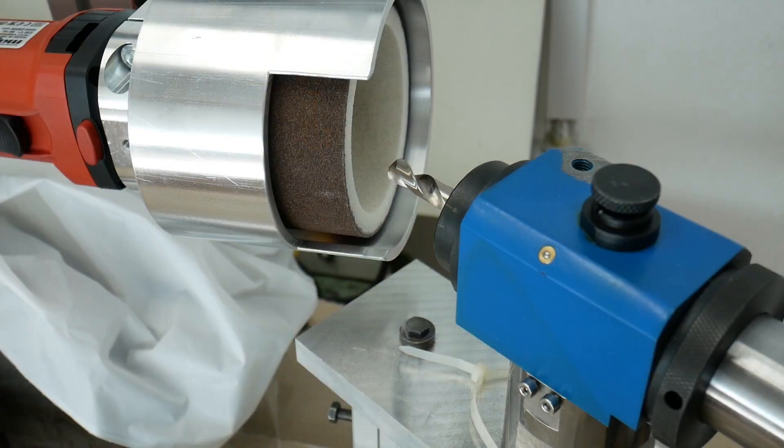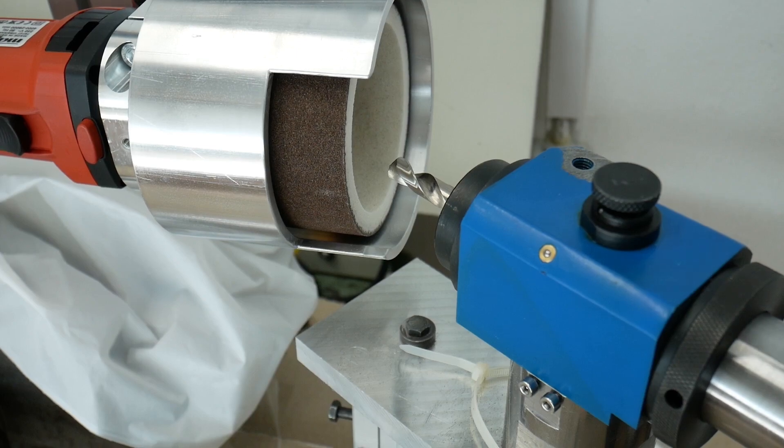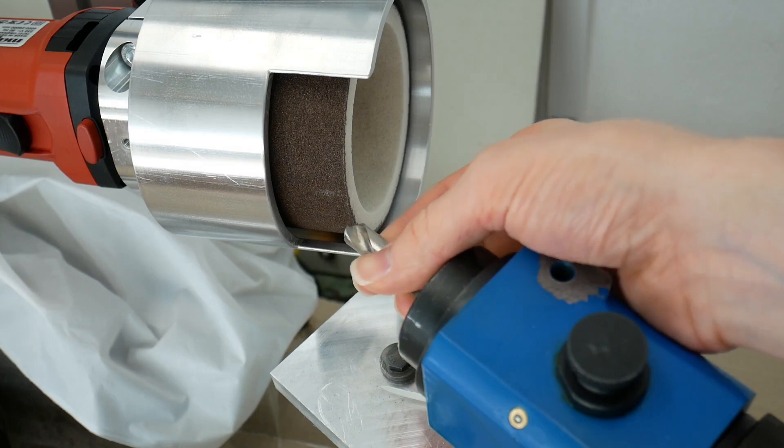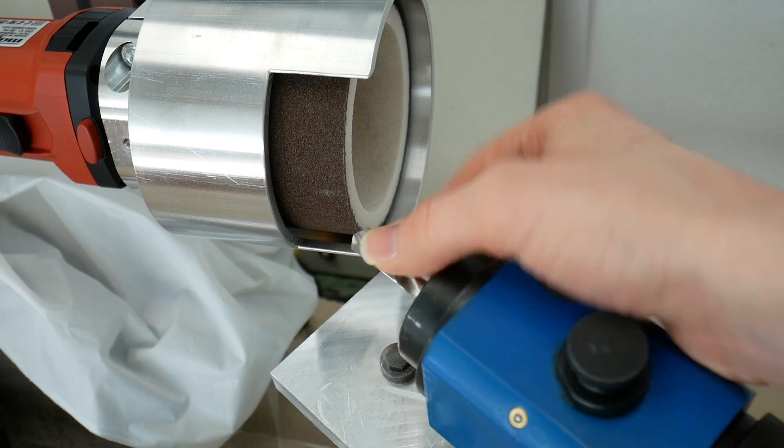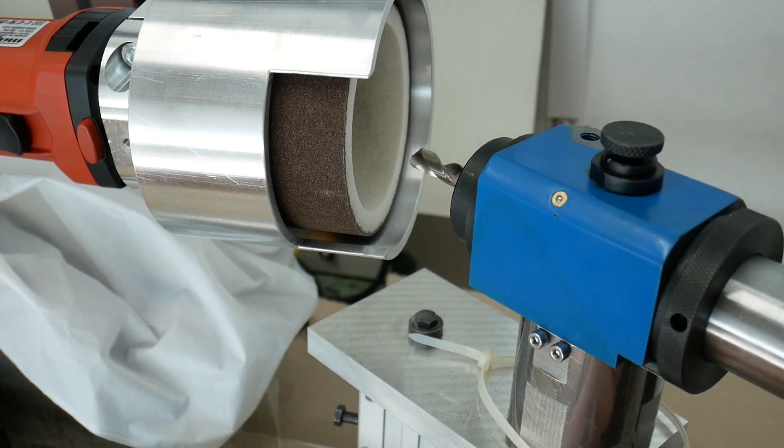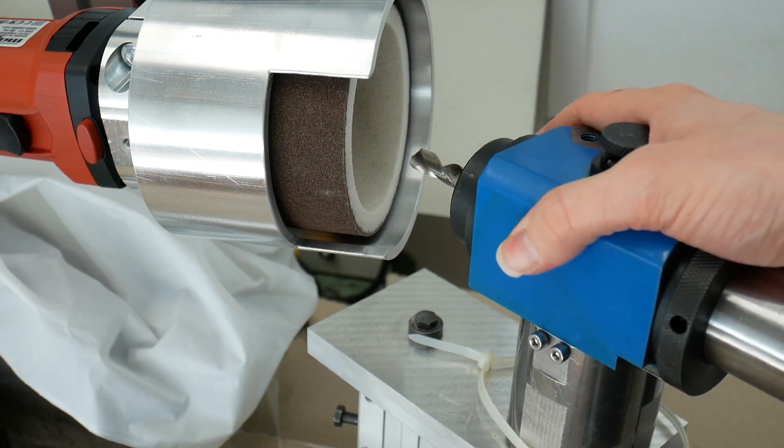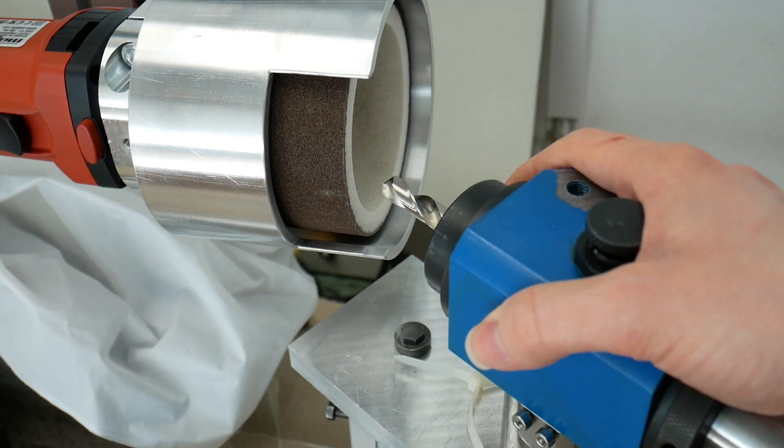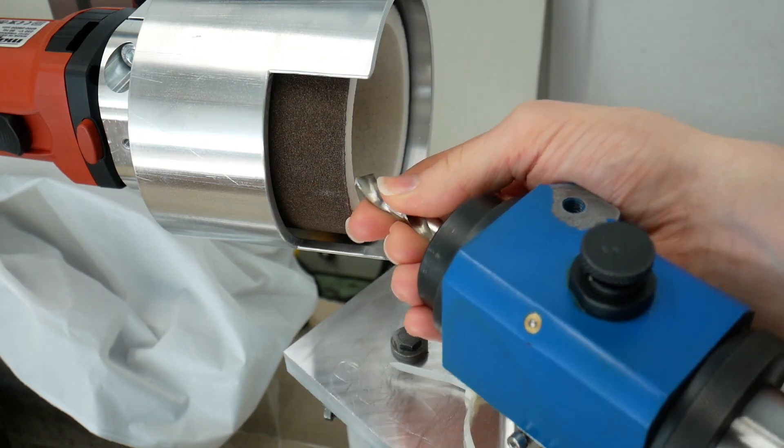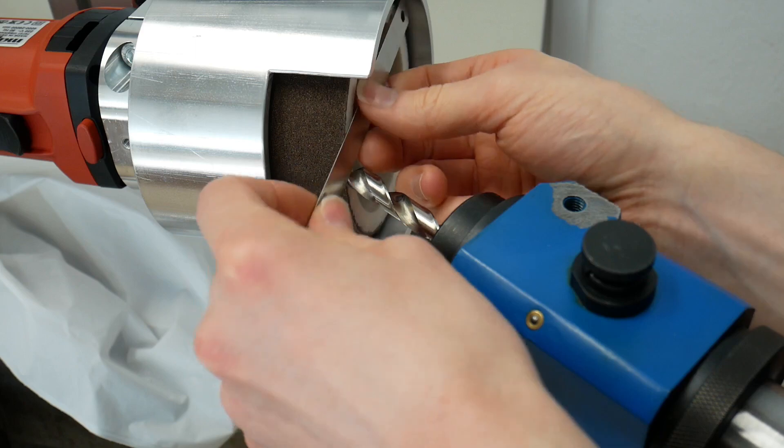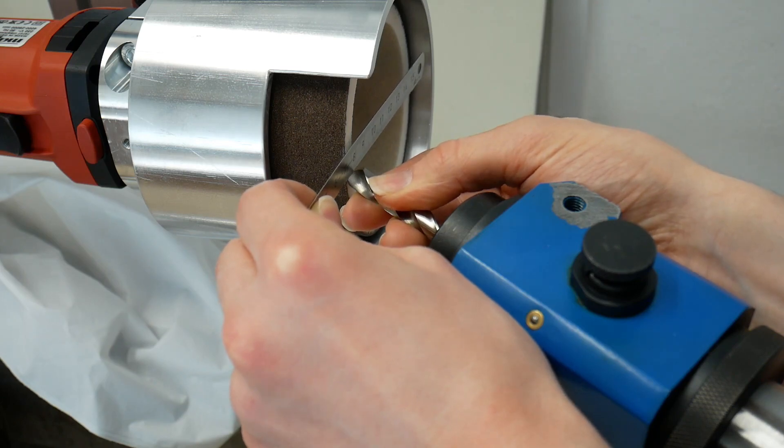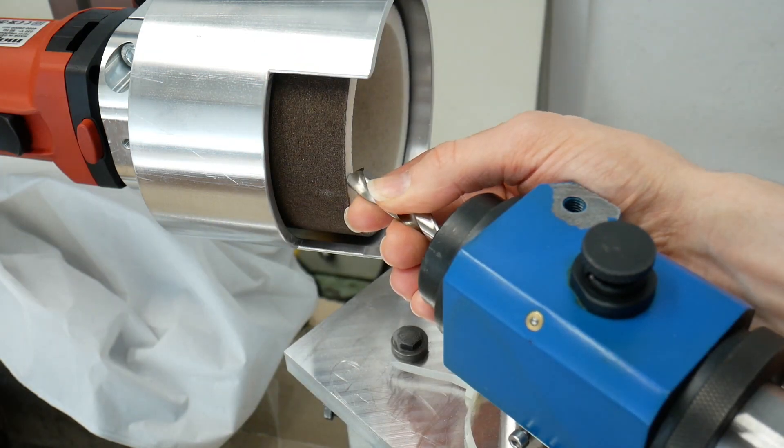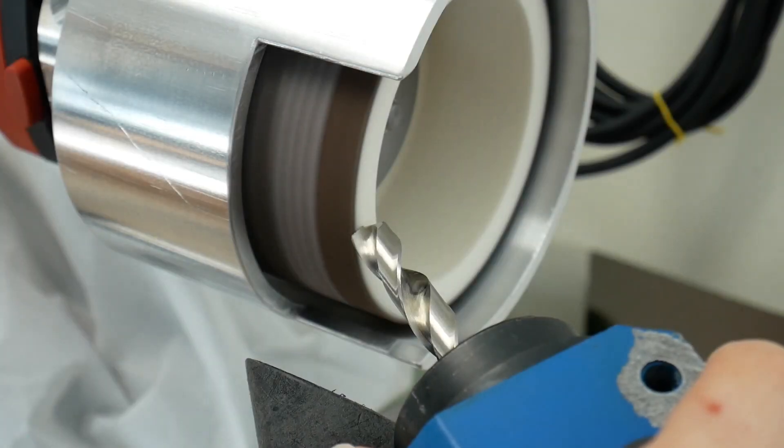Before I start, everything I do is following Stefan Gotteswinter's video on four facet grinding. So for a good explanation, watch that video. I have a 10mm drill in the collet here. The upper joint is set for a tip angle of 118 degrees on the drill. And the lower one right here is set to 5 degrees. That's the clearance angle of the primary relief. What I'm doing now is bringing the cutting edge of the drill nearly horizontal and then clamp the collet in this position.